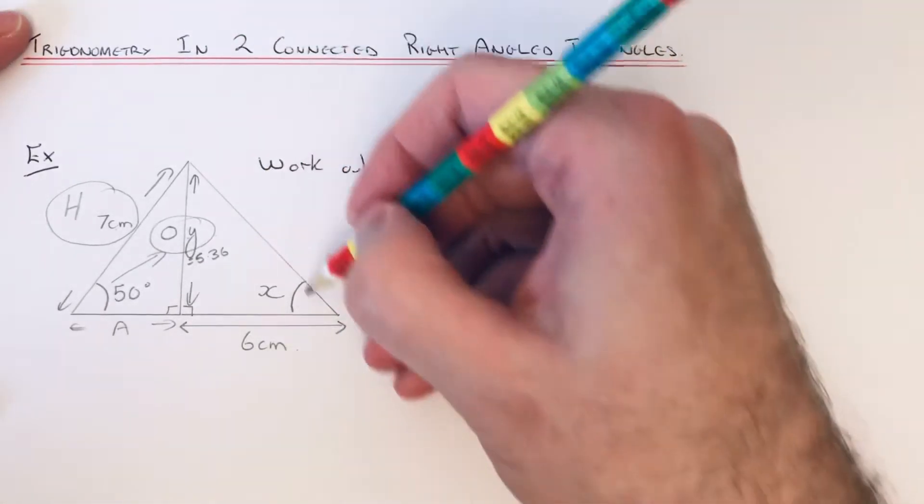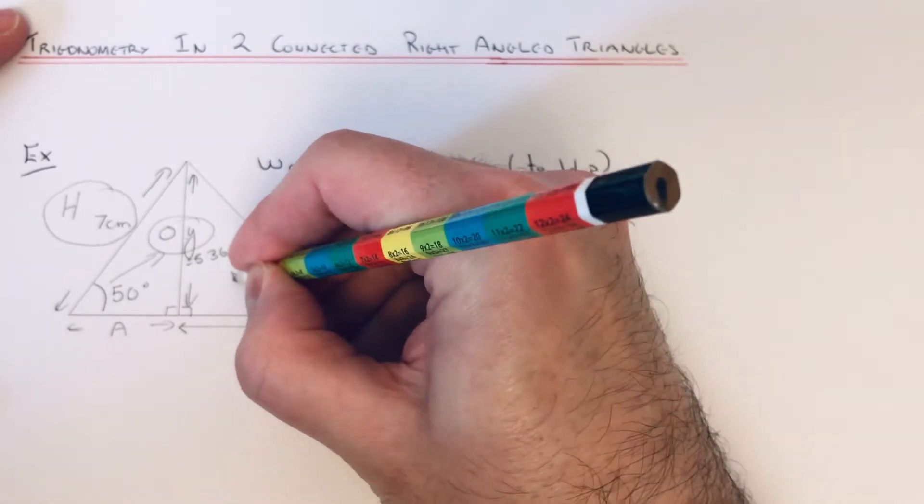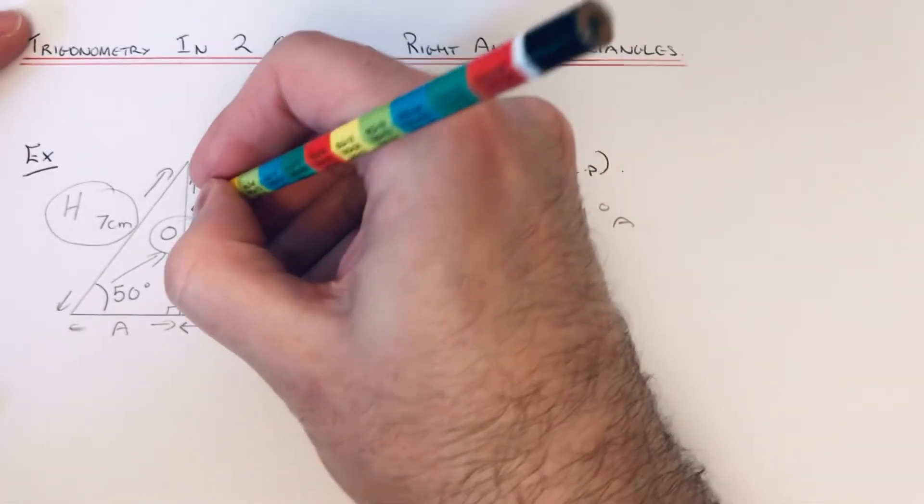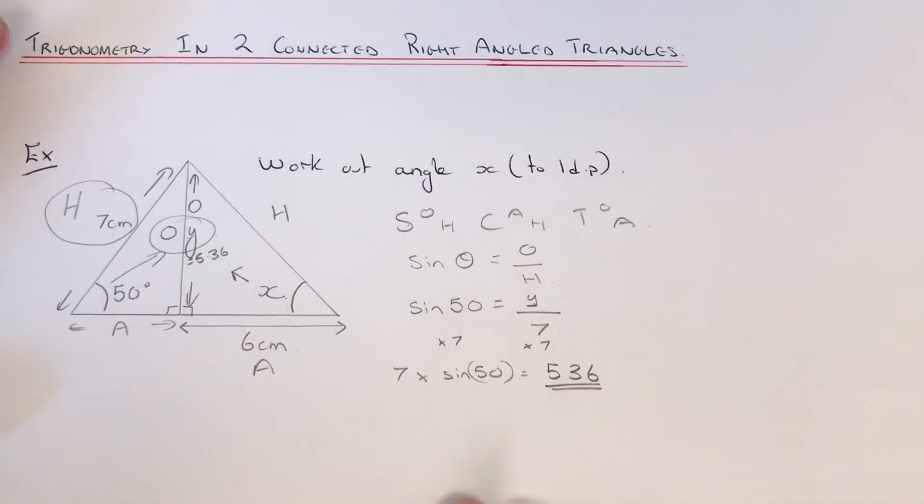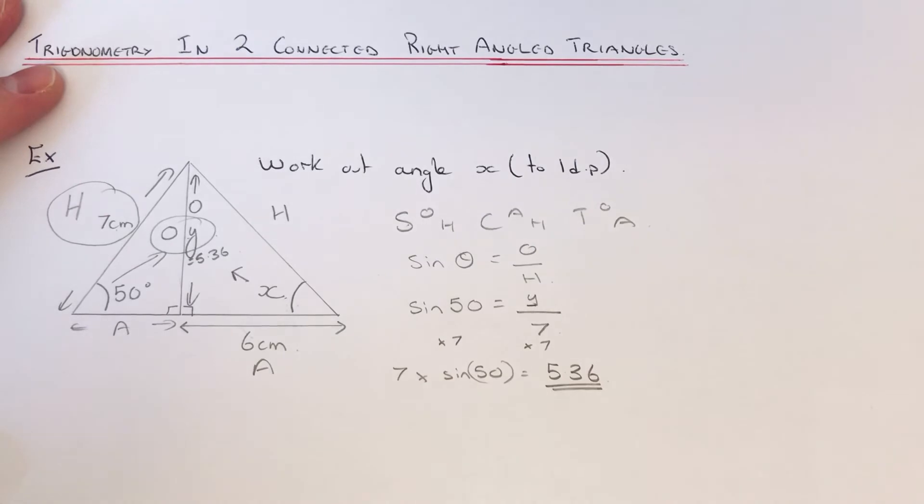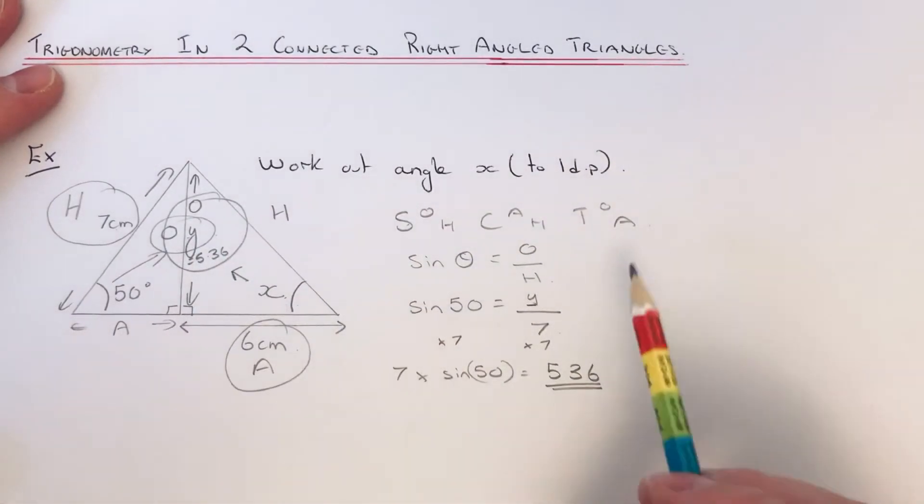This side here would be the hypotenuse. The side opposite the angle which we need to work out is the opposite, and our third side is the adjacent. We've now got to select the correct trigonometry formula. We've got the adjacent and the opposite, so the opposite and the adjacent is tan this time.